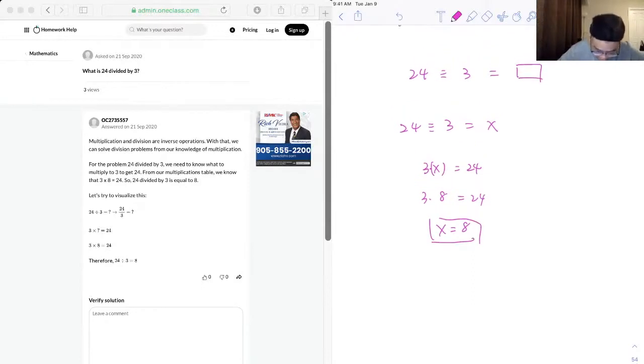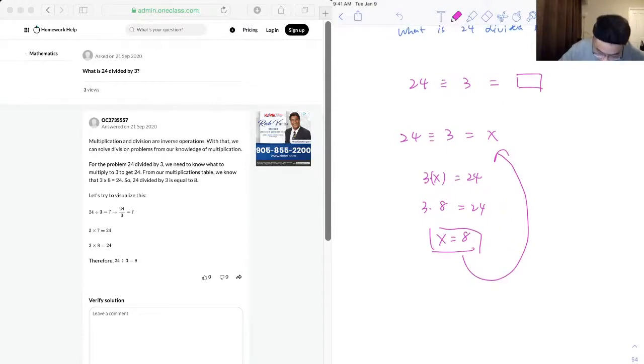So, same thing, if we just substitute back in there, we know that 24 divided by 3 is equal to 8. So, that's the answer for this question.